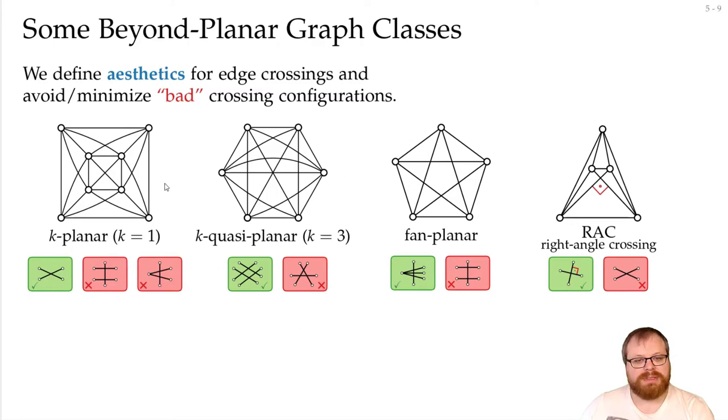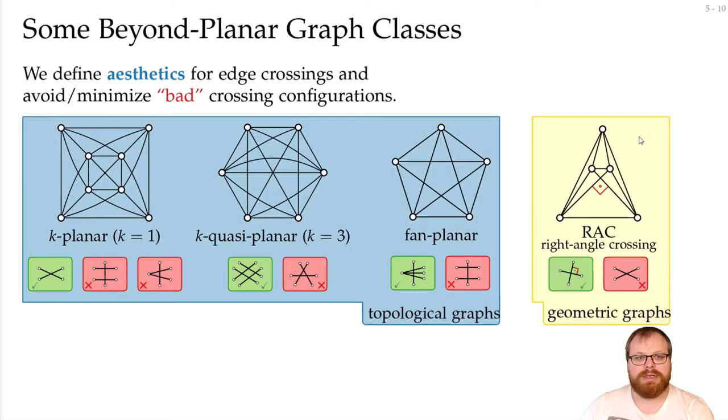There is quite a difference between these types and this type here. It's because these are topological graphs. Here everything only depends on the embedding. So we don't really care how the edges exactly look like. We only have to know which edges cross each other. And here it's completely geometric. So here we need the exact coordinates to figure out if the crossing is at a right angle or not.